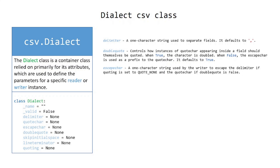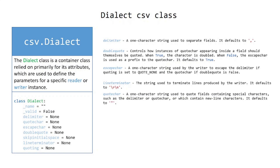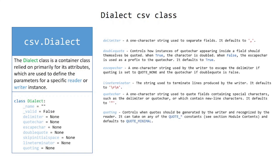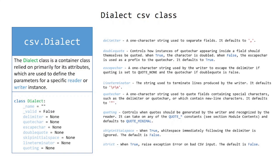escapechar — a one-character string used by the writer to escape the delimiter if quoting is set to QUOTE_NONE, and the quotechar if doublequote is false. lineterminator — the string used to terminate lines produced by the writer. quotechar — a one-character string used to quote fields containing special characters such as the delimiter or quotechar, or which contain newline characters. quoting — controls when quotes should be generated by the writer and recognized by the reader; it can take any of the quote constants and defaults to QUOTE_MINIMAL. skip_initial_space — when true, whitespace immediately following the delimiter is ignored; default is false. strict — when true, raises exception error on bad CSV input; default is false.